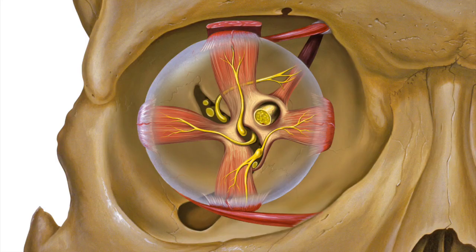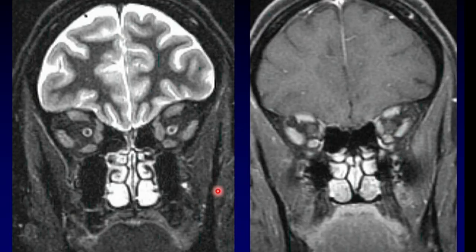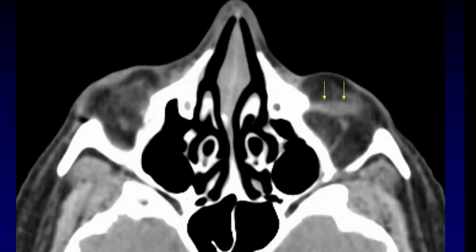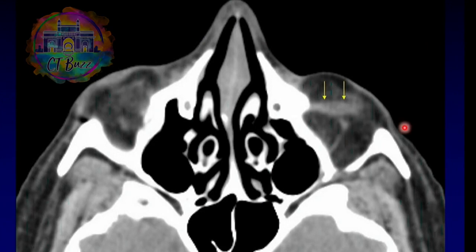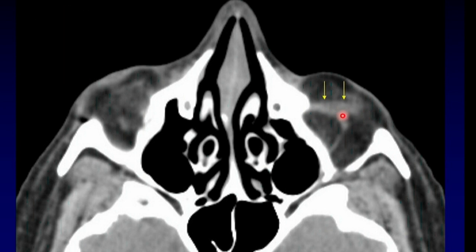Remember that there are only five extraocular muscles that we can see on a coronal image: four rectus muscles and one oblique muscle, which is the superior oblique muscle. If you want to find the sixth extraocular muscle, that's the inferior oblique muscle. It does not go back to the annulus of Zinn — it is only anterior — and you can see it on an axial high-resolution image as it runs from the bottom of the globe medially to insert upon the orbital rim.